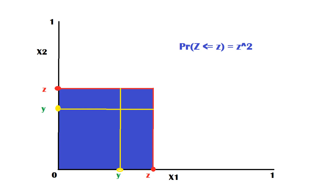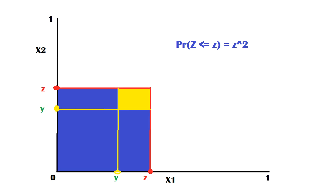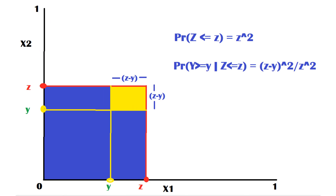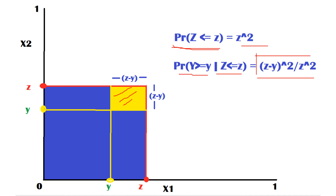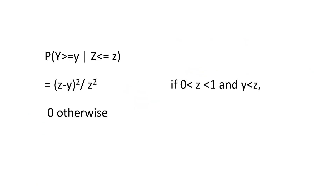We also show y along both axes. The probability that y is greater than or equal to y and z is less than or equal to z corresponds to the yellow area. The conditional probability P(Y ≥ y | Z ≤ z) equals P(Y ≥ y and Z ≤ z) divided by P(Z ≤ z), which is the yellow area divided by z squared — giving (z − y)² / z².